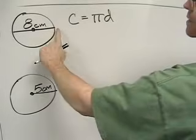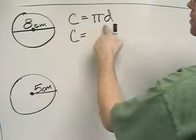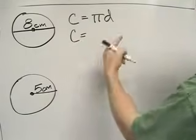So in this first circle, I can see that the diameter is 8 centimeters. So I'm going to replace each of the variables with a value if I know it.